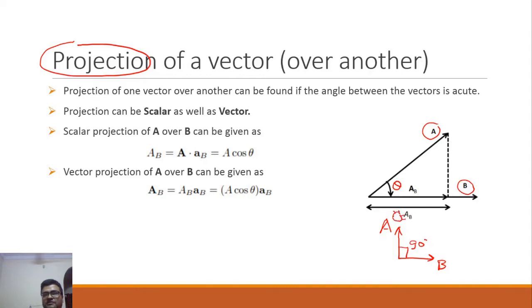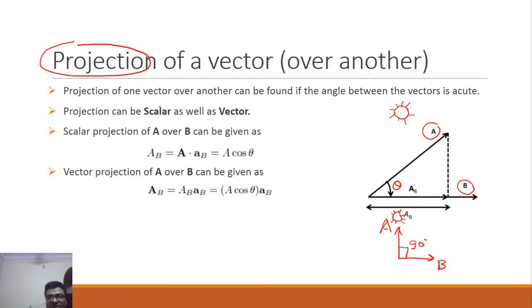To understand this with an analogy: if the Sun is directly overhead at twelve o'clock, no shadow will fall from vector a onto b. But if a is tilted, you will get a shadow of a on b. That is how projection works. There are two types of projection: scalar projection and vector projection.